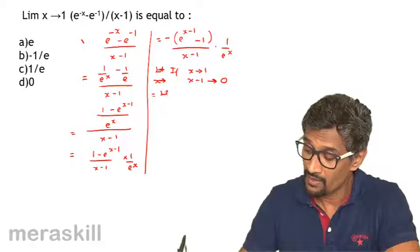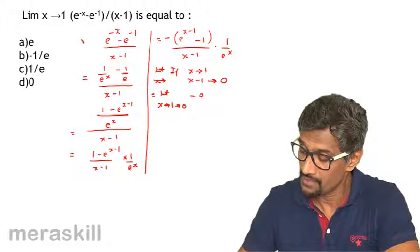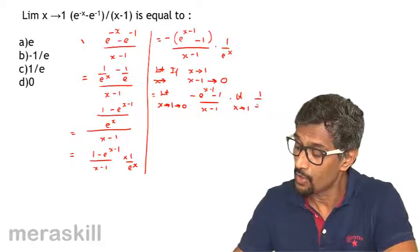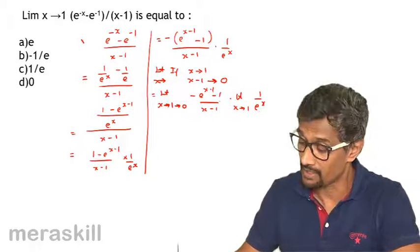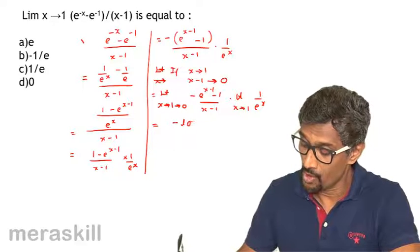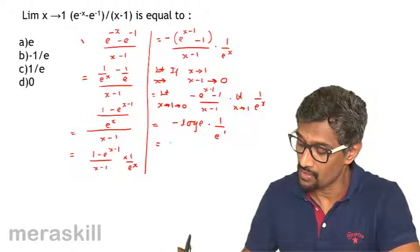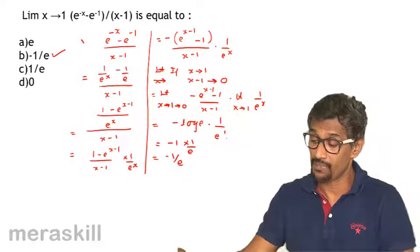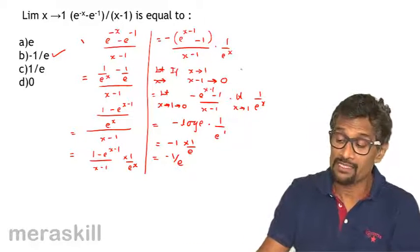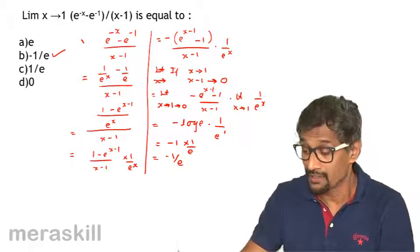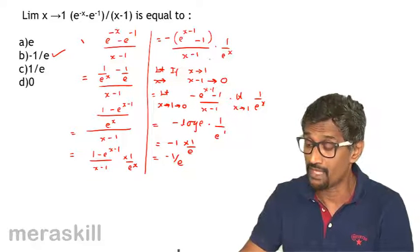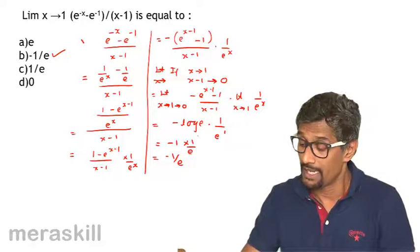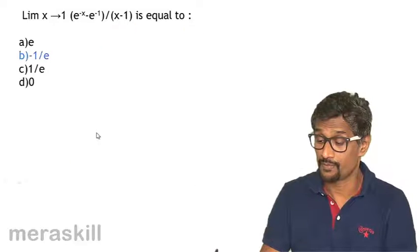So now this becomes the limit as (x - 1) tends to 0 of minus (e^(x-1) - 1)/(x - 1), times (1/e^x). The first part equals minus log e (which is -1), and as x tends to 1, 1/e^x tends to 1/e. Hence the answer is minus 1/e. The key concept here is substituting so that the exponent term approaches 0.